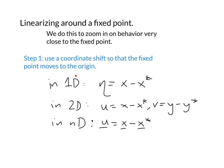So in a 1D system we define a new coordinate η that equals x, our old coordinate, minus x*, the location of the fixed point. This coordinate is a signed distance from the fixed point. When we're right at the fixed point it's zero, and when we're close to the fixed point it's small.